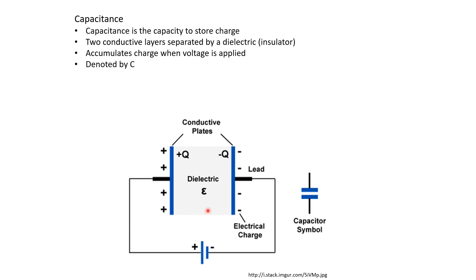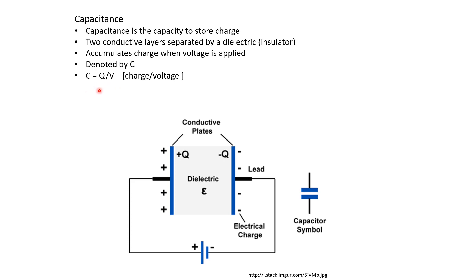The capacitance is typically denoted by the symbol C, and C is equal to Q over V, where Q stands for charge, V stands for voltage, and C stands for capacitance. This formula tells us that if the capacitance is large, then you will be able to accumulate more charge on the capacitor per unit voltage.